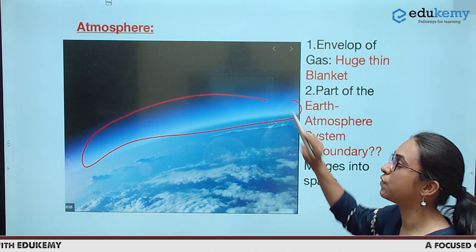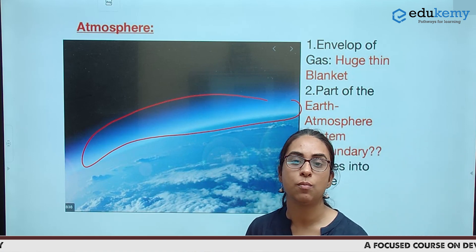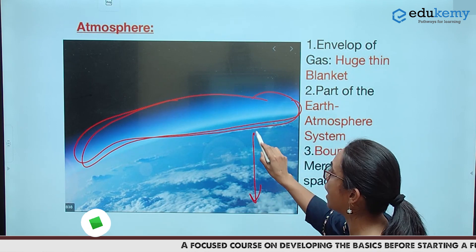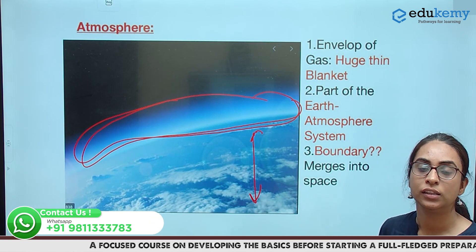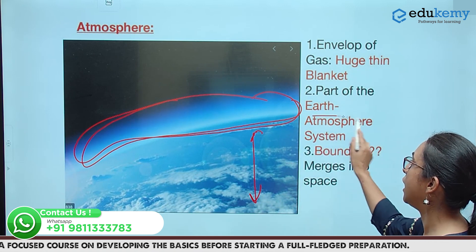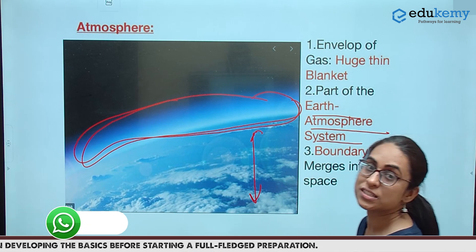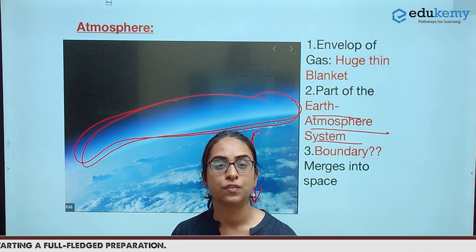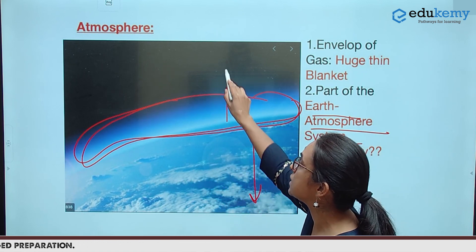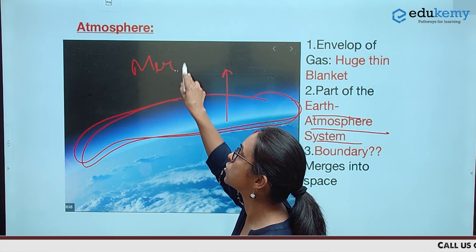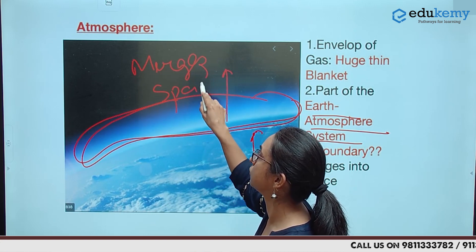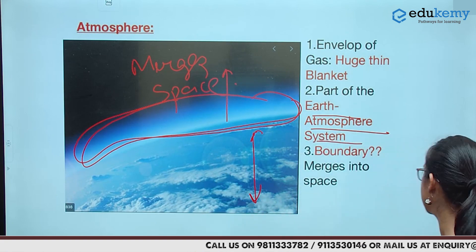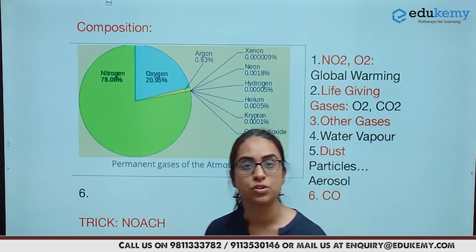It is very important that if our basics are in place, only then will we be able to solve such questions. Talking about the basics of the atmosphere: atmosphere is basically an envelope of gas that surrounds our earth. It is not separated from the earth but is a part of the earth-atmosphere system. There is no fixed boundary of the atmosphere — as it increases in height, it merges with space. So this is the atmosphere.